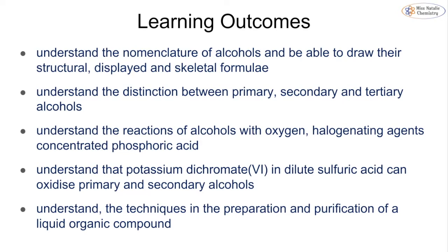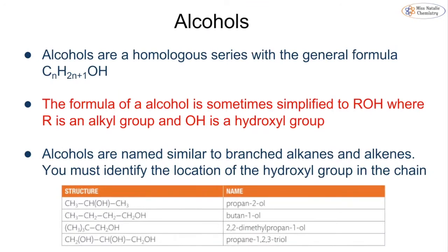Alcohols are a homologous series with the general formula CnH2n+1OH. They are not hydrocarbons because we have this hydroxyl group attached to it. The formula can sometimes be simplified to ROH where R is any alkyl group, for example ethyl or propyl, and the OH being our hydroxyl group.